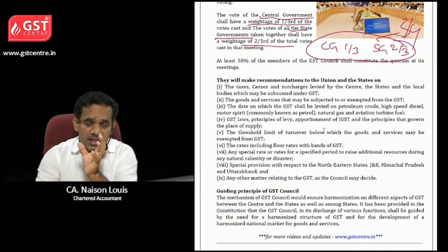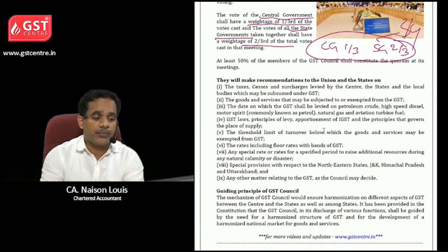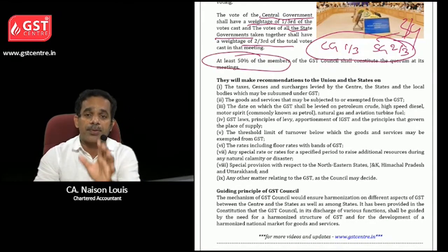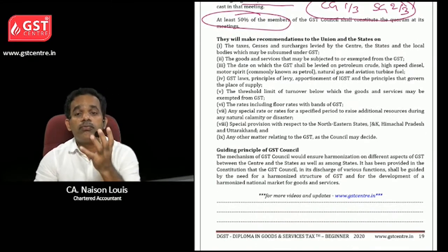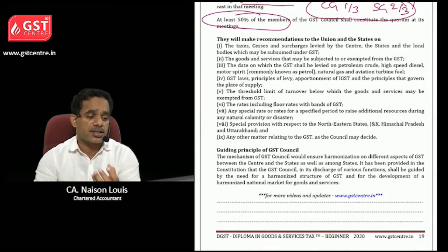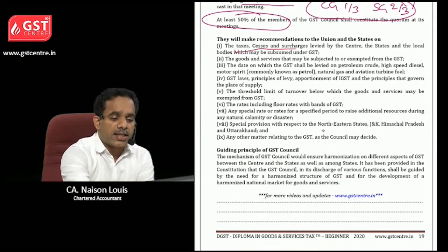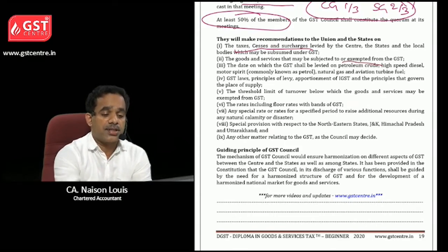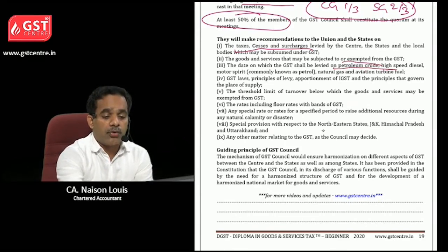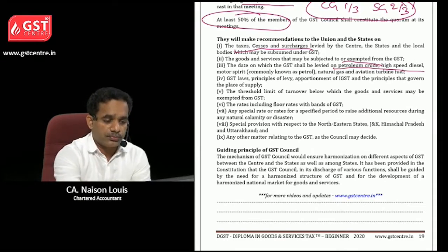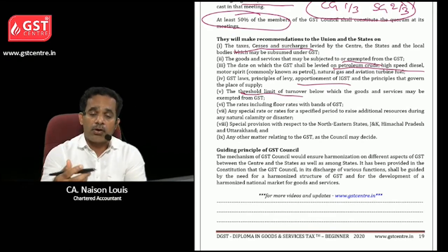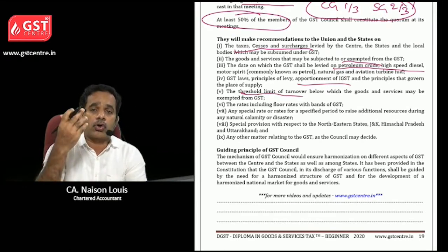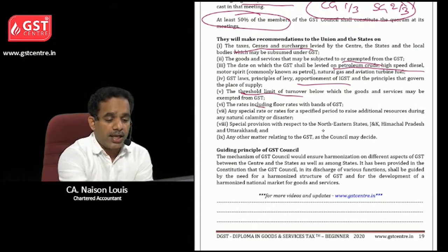There is also a specific quorum: at least 50 percent of the members should be present for a meeting to have quorum. So weighted votes and quorum are important. The GST Council takes decisions on matters such as taxes and surcharges, exemptions, and how to deal with special goods like petroleum, as well as apportionment of IGST and the threshold limit.